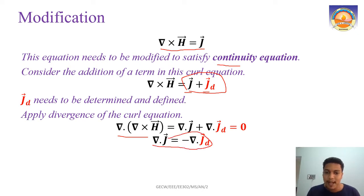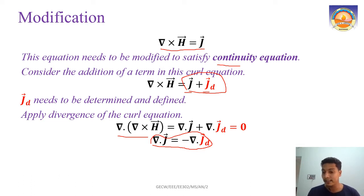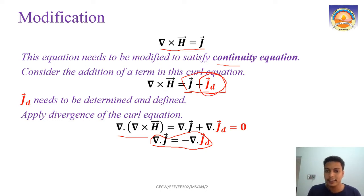This means del dot J equals minus del dot Jd. That is what Maxwell's modification gives us by applying this alongside the continuity equation. So del dot J equals minus del dot Jd. Now we can already see the problem with Ampere's circuit law in static conditions is resolved, because del dot J is no longer forced to be zero.